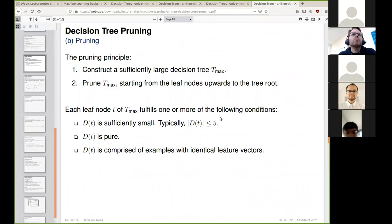All of these criteria do not work in practice, so we turn to pruning. We apply a very basic principle: construct a very large decision tree called T_max, which is basically the decision tree from the ID3 algorithm. We go as far as possible, saying all leaf nodes should have splits smaller or equal than five, or which are pure, or which are only comprised of examples with identical feature vectors. We are deliberately overfitting.